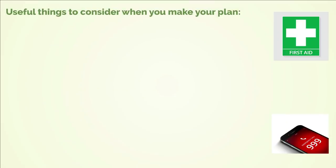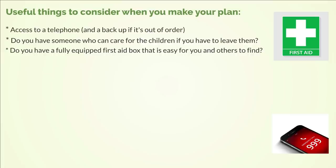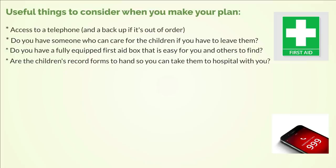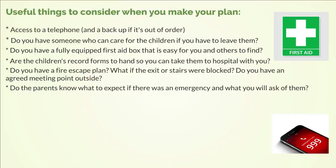Useful things to consider when you make your plan: access to a telephone and a backup if it's out of order. Do you have someone who can care for your children if you have to leave them? Do you have a fully equipped first aid box that is easy for you and others to find? Are the children's record forms to hand so you can take them to hospital with you? Do you have a fire escape plan? What if the exits or stairs were blocked? Do you have an agreed meeting point outside? Do the parents know what to expect if there is an emergency and what you will ask of them?